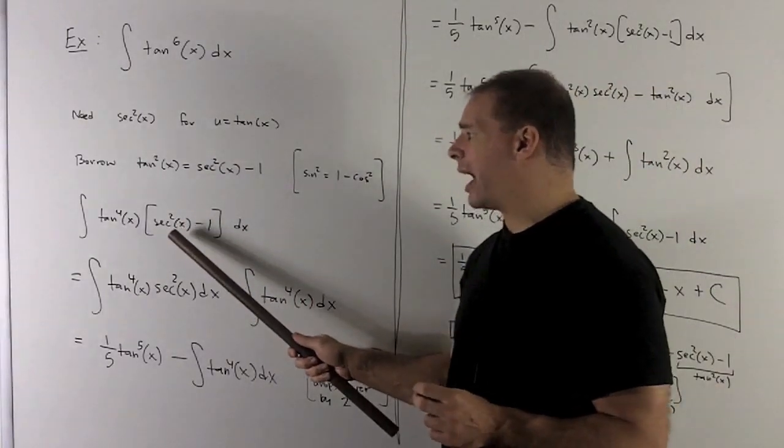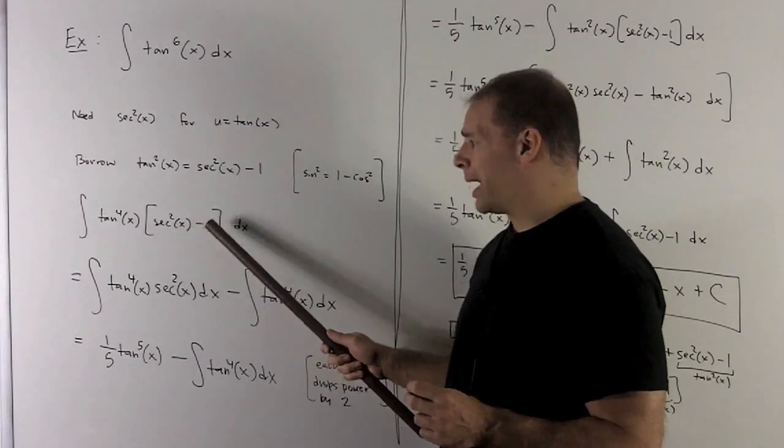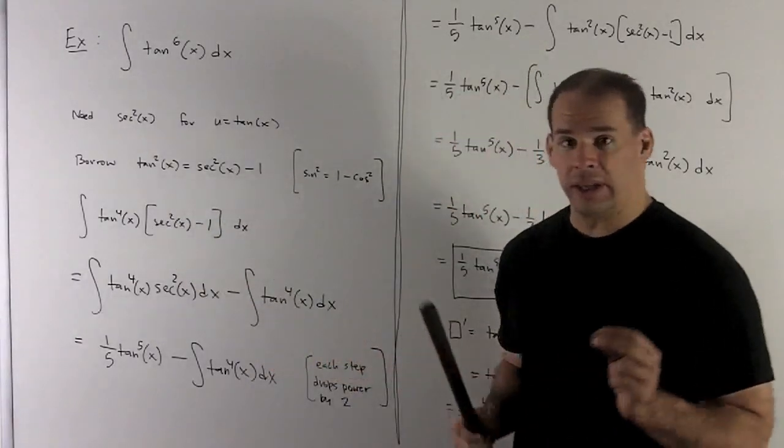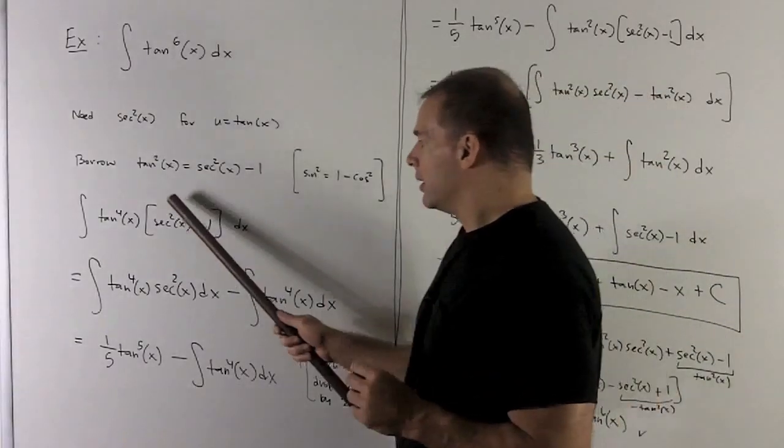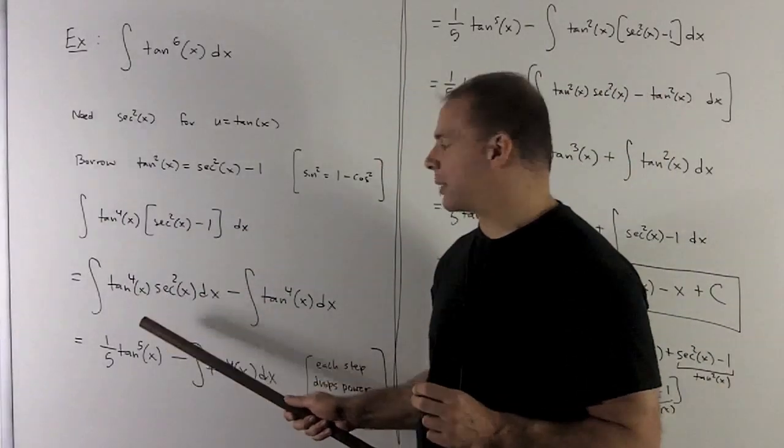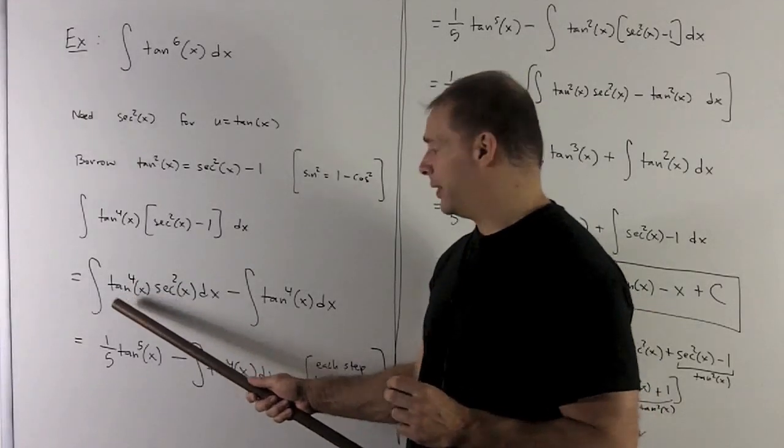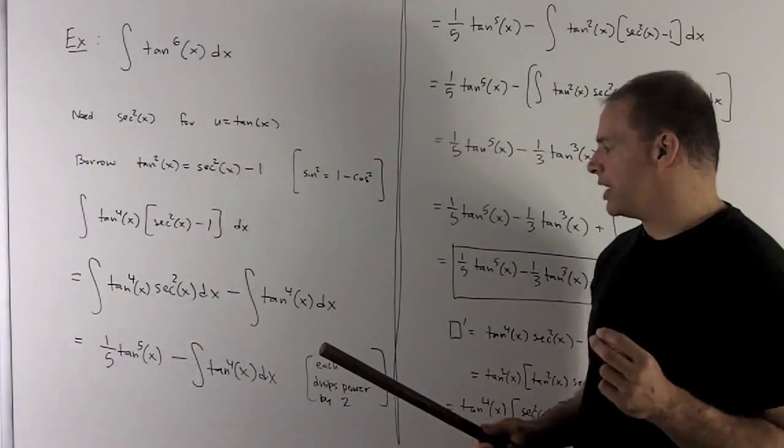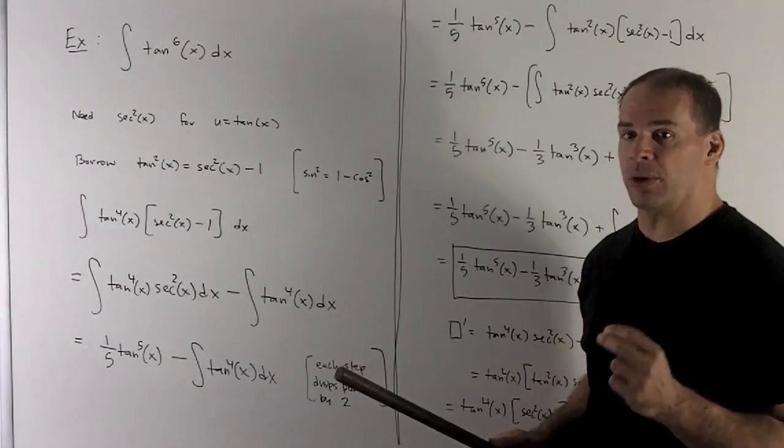So I can pull that tan squared out as secant squared minus 1. This is going to be good on one part, not so good on the other. So tan to the 4th secant squared, this is great. We can use substitute tangent out, and this will work just fine. But on my other piece, I have a tangent to the 4th power, which I still don't know how to do.